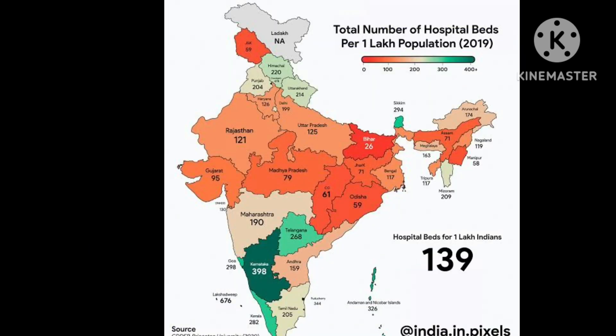This map shows the total number of hospital beds per one lakh people in 2019. You can notice that smaller states tend to have more hospital beds. The lowest in India is Bihar with just 26 beds per lakh people. The national average is 139, and the highest is Karnataka with 398, which is impressive.